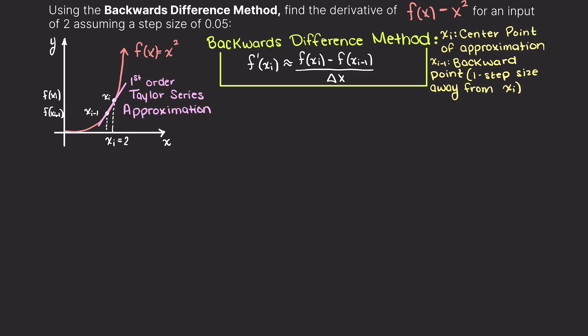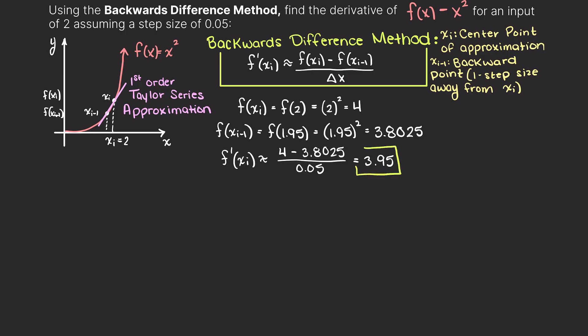All we need to do is evaluate our function at two points. Let's evaluate our function x² at 2 and 2 minus our step size, which is 1.95. Plugging in all the required variables, we receive that the derivative is approximately equal to 3.95.